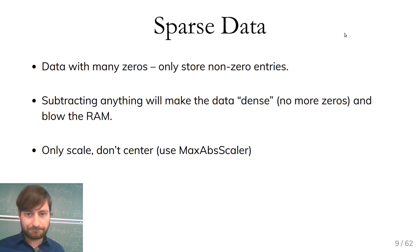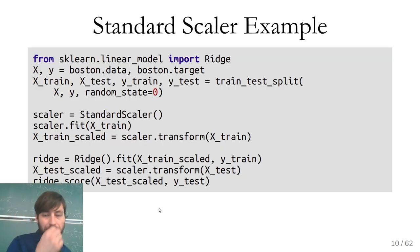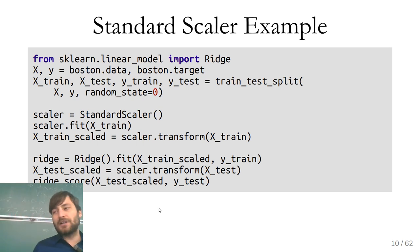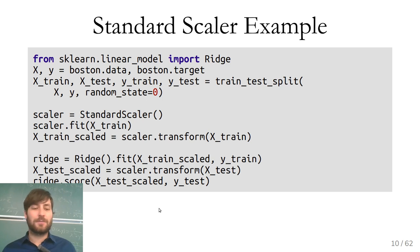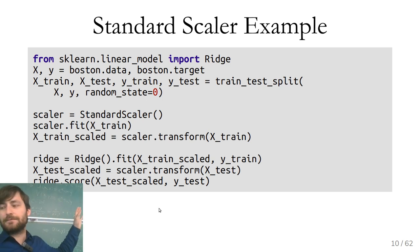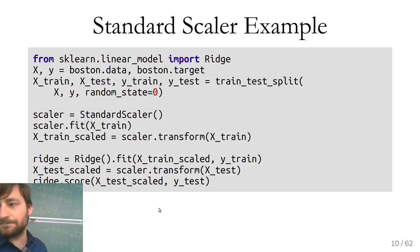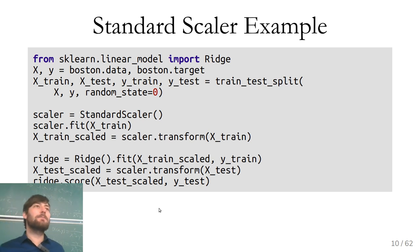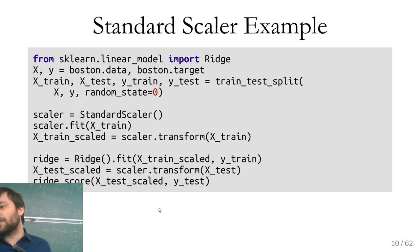Let me do a simple example with the StandardScaler using the Boston housing dataset. I use a linear regression model called Ridge — we'll talk more about it next Monday. I split my dataset into training and test sets. The StandardScaler is a Python class; I instantiate it and call fit on the scaler with the training data, which just computes the mean and standard deviation. Then I call transform on the training dataset, which subtracts the mean and divides by the standard deviation to produce the scaled dataset.